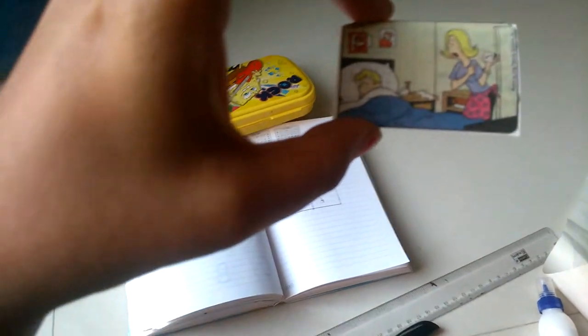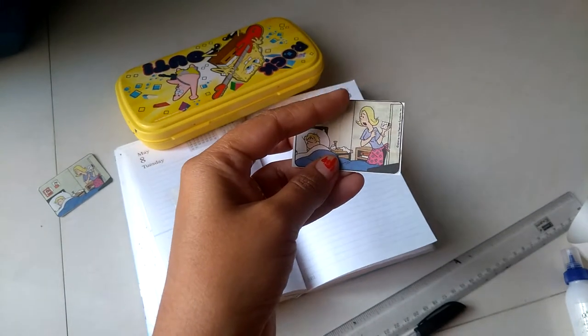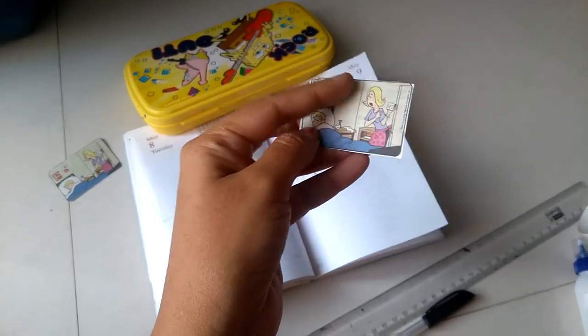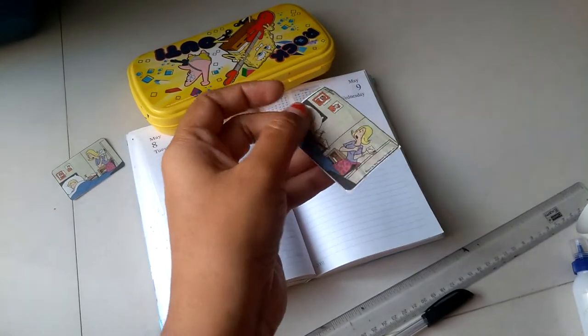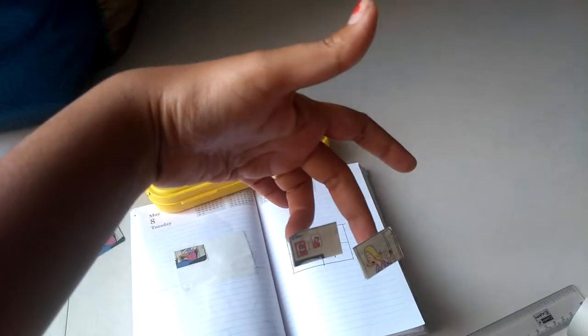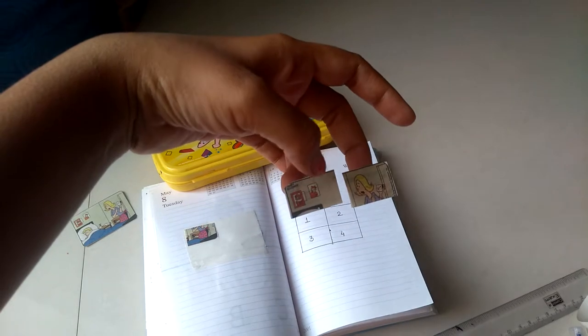It will look like this. Now I will cut this sticker in four parts, horizontal and vertical. Here are the cut pieces of that picture.